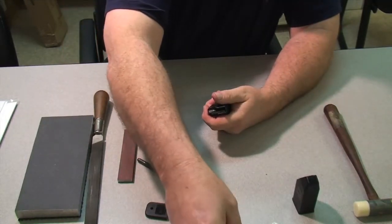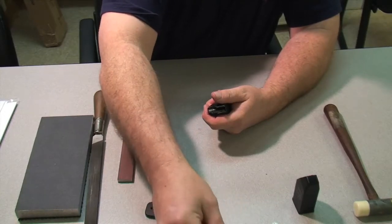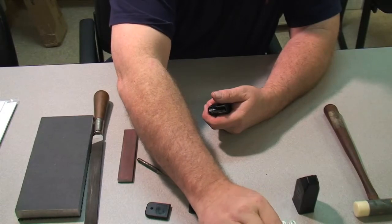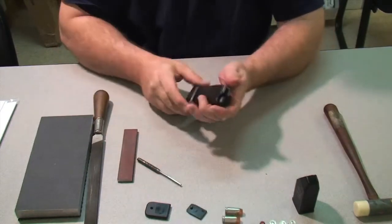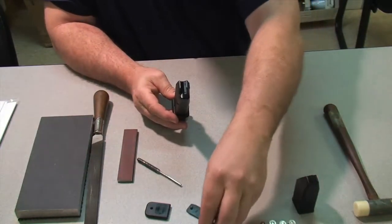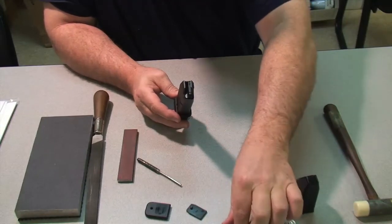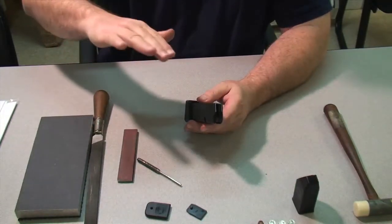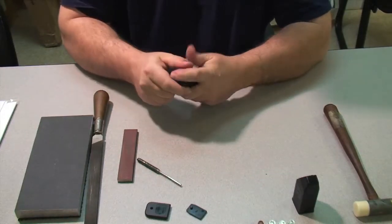Some of the older style followers, this is not necessary, but it seems that as of late, these new followers are a little bit wider at the base. So what we're going to do is make a small radius on the backside to make that transition smoother into the base pad.